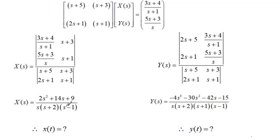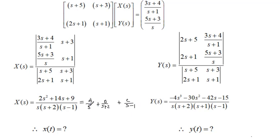What remains is to use partial fractions to determine the inverse Laplace transforms of X(s) and Y(s). Note that both Laplace transforms are proper fractions — for example, the degree of the numerator is 3 while the denominator has degree 4, so you do not need polynomial division. Simply write, for example, A/(s) + B/(s+2) + C/(s−1), then determine the unknowns A, B, and C to find x(t) and y(t). I will not work through this now as you are at a familiar point.